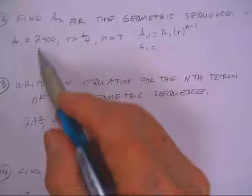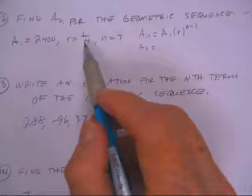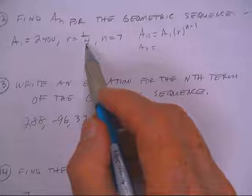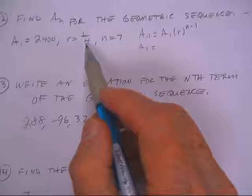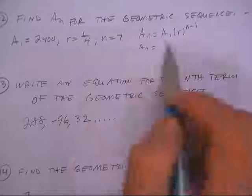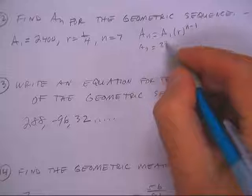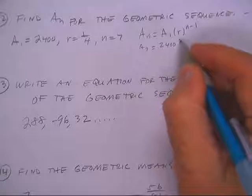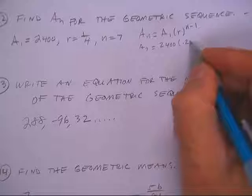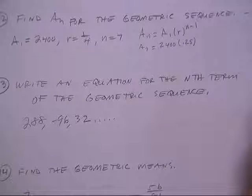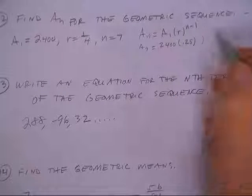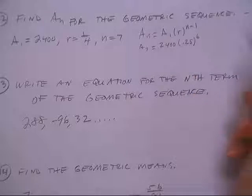So you could just take the first term and start multiplying by 1/4 every time. That would work. Or you can put it in this formula. There's the first term. The common ratio, let's do it in decimal form. That's a quarter. And 7 minus 1 is 6.